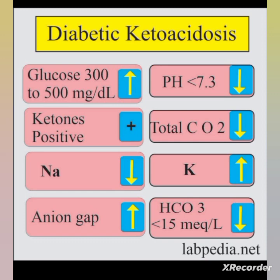Key points to remember: glucose level will be 300 to 800 mg/dL; pH less than 7.3 indicating acidosis; ketone bodies positive; total CO2 decreased; sodium decreased due to dehydration; potassium may initially be increased but will gradually decrease; anion gap will be increased; and bicarbonate level will be decreased.